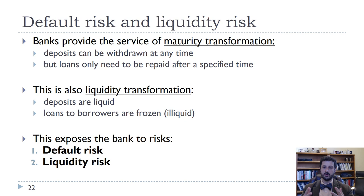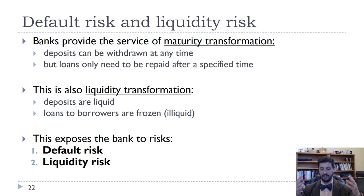There are a couple types of risk banks have to worry about. The obvious one is default risk, where people just don't pay back their loans. For a mortgage loan, the bank has the house as collateral — if you don't pay, they can take the house. On the other hand, if it's a credit card loan and you don't pay it back, the bank can take you to court, but if you declare bankruptcy, they're probably not going to get paid back in full. That's why you pay a higher interest rate on credit cards than on mortgages — there's a much higher default risk.